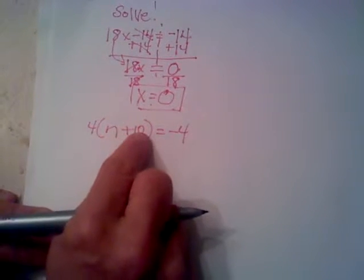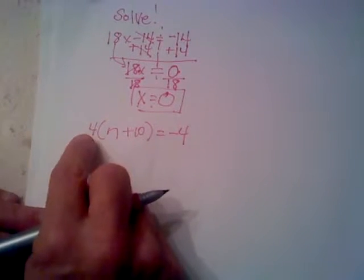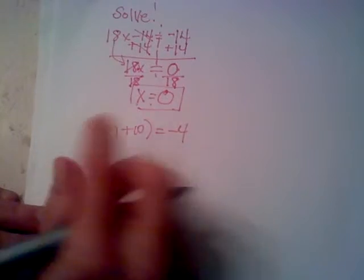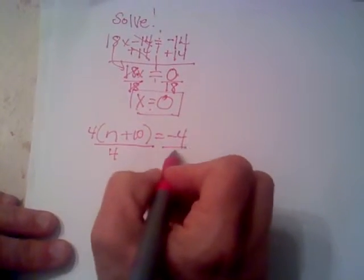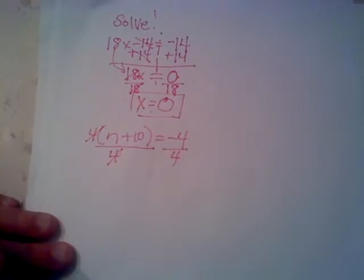You can distribute the 4n into the parentheses, or since 4 is being multiplied times this side, I can actually just go ahead and divide both sides by that 4 and get rid of it from the beginning.